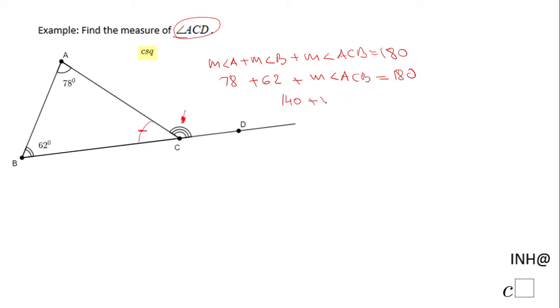140 plus the measure of angle ACB equals 180. So basically now we're going to subtract 140, and we end up with the measure of angle ACB equals 40 degrees.